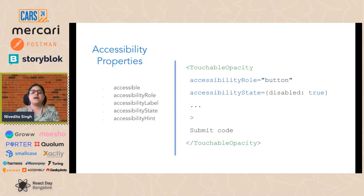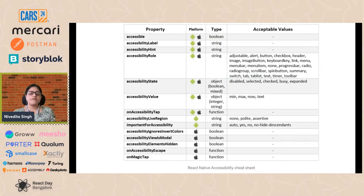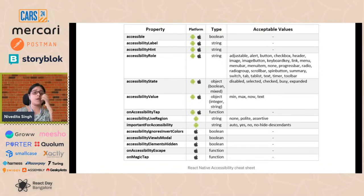Here's an example of the difference between role and label: you have a button for 'Submit Code' that's currently disabled. Since that text is already descriptive, you wouldn't need to add an extra label. There are other properties available — some specific to Android and some to iOS. For example, accessibilityLiveRegion is a good way on Android to make announcements: when this property is set to true, any changes to this view will be announced automatically. There's a property called 'polite', meaning the announcement won't interrupt whatever the screen reader was already saying.